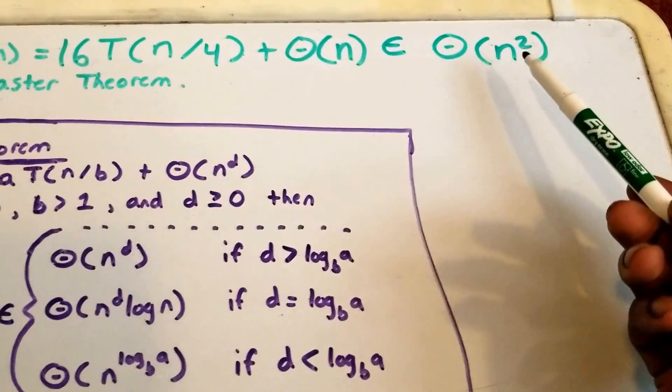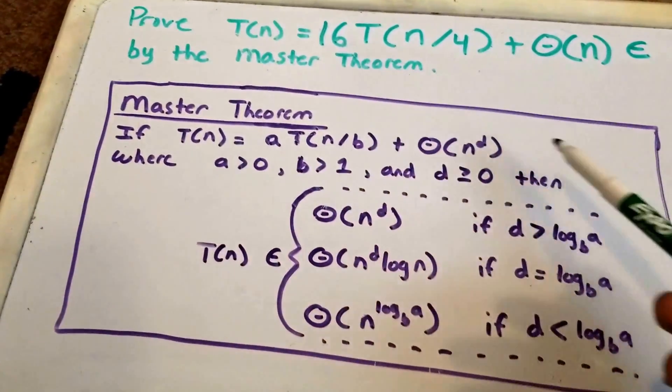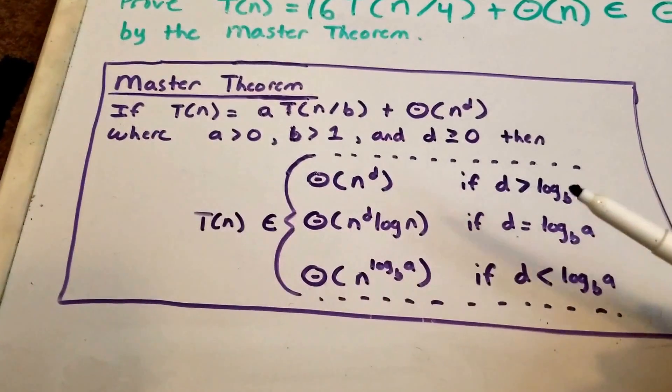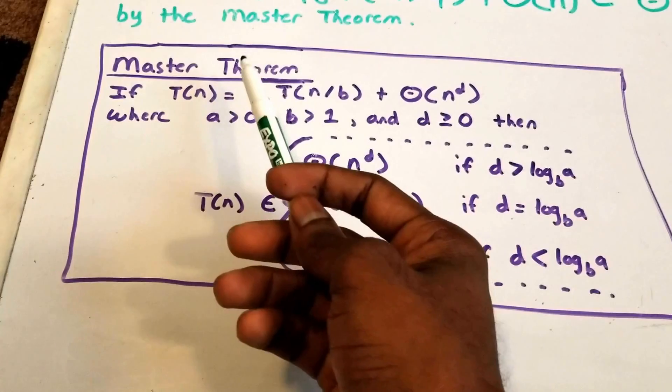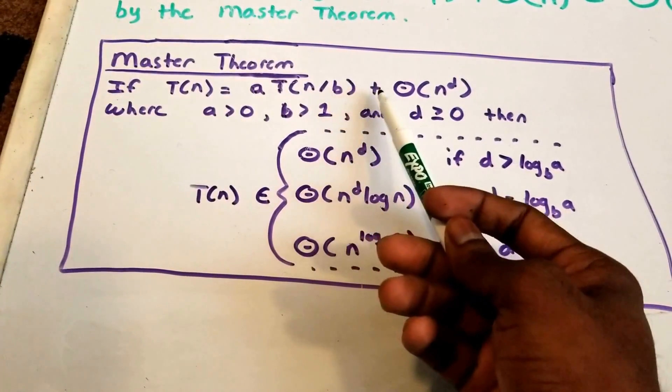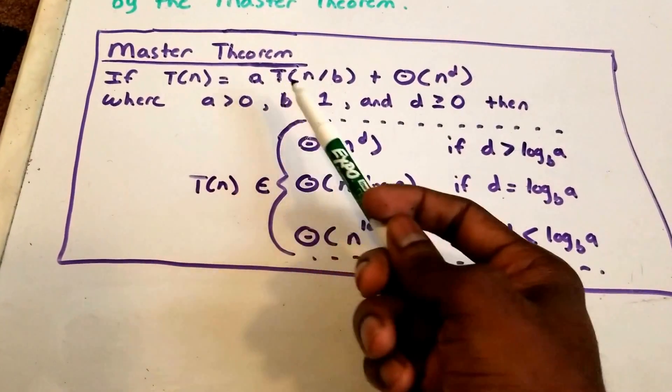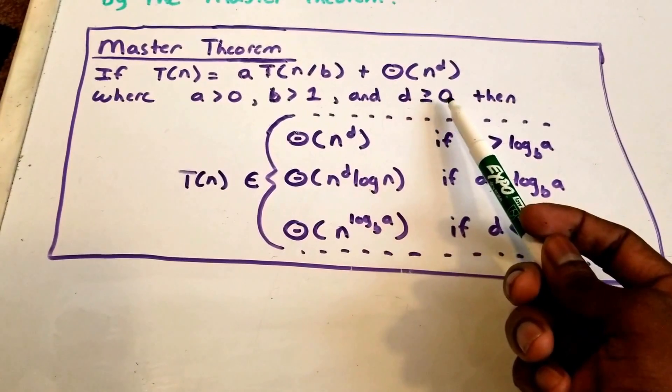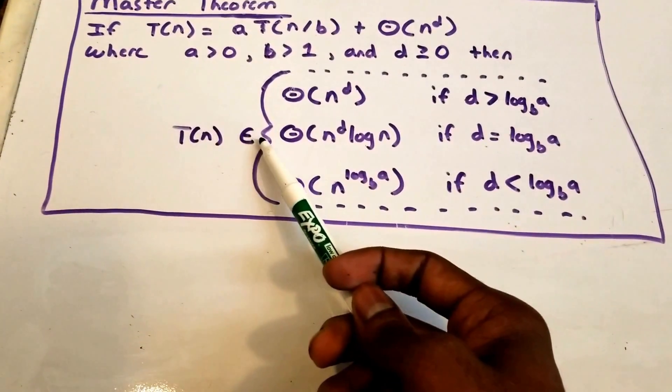and we want to do this by the master theorem. So here in our purple rectangle I have the master theorem and it states if T of n is in the form or is equal to a times T of n divided by b plus theta of n to the power of d where a is greater than 0, b is greater than 1, and d is greater than or equal to 0 then our function T of n belongs to